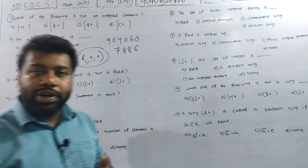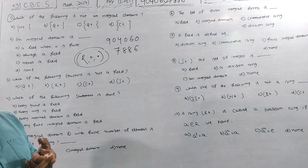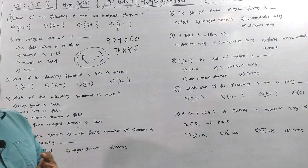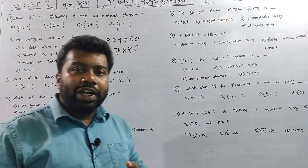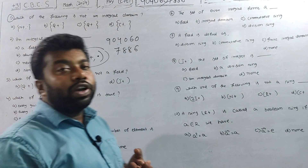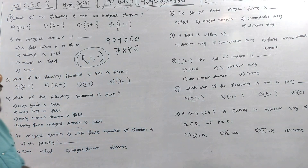You can have a closure property, associative property, identity property, inverse property. You can satisfy all these properties.